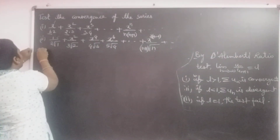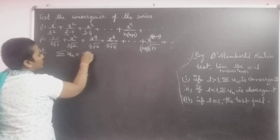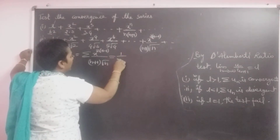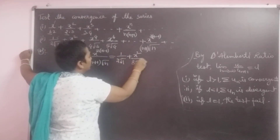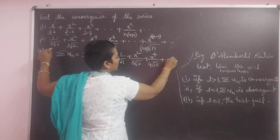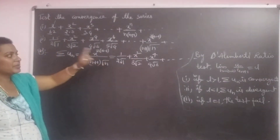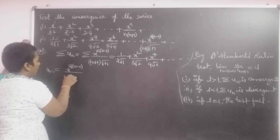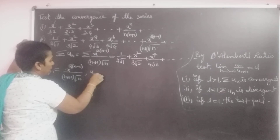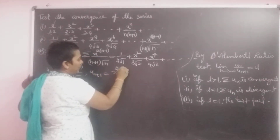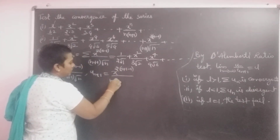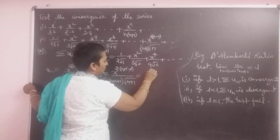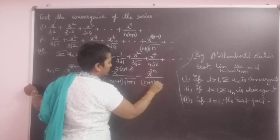The second problem: Σuₙ = Σ x^(2(n−1)) / ((n+1)√n), which equals 1/(2√1) + x²/(3√2) + x⁴/(4√3) + ... It is also a positive term series. Here uₙ = x^(2(n−1)) / ((n+1)√n), and uₙ₊₁ = x^(2n) / ((n+2)√(n+1)).